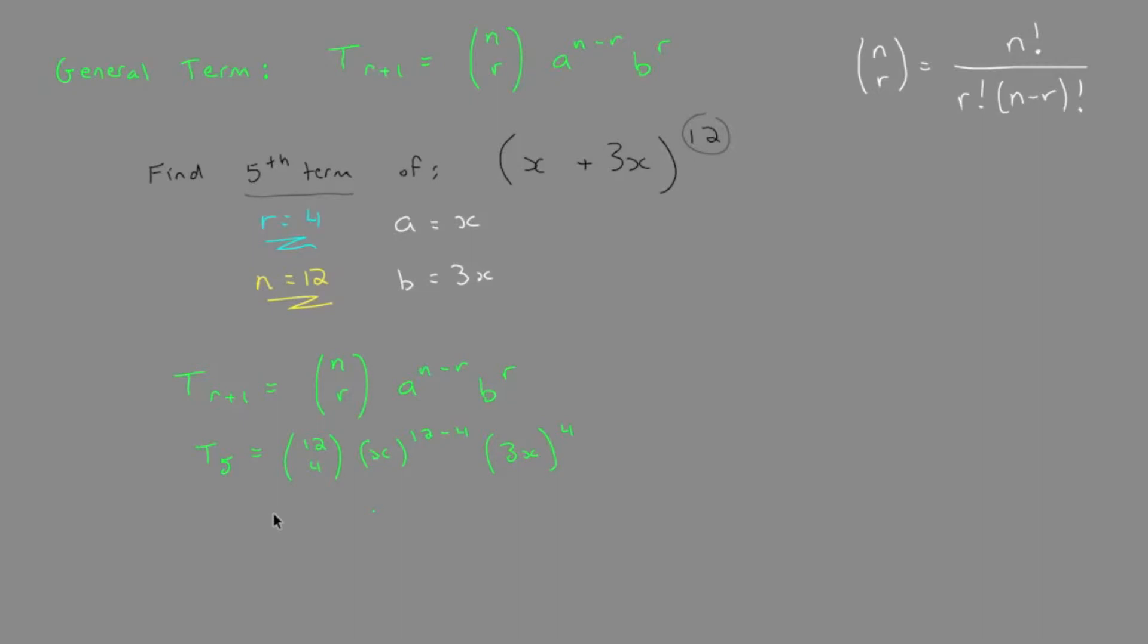The general term is written as just not as simplified as we can get it. So the general term just keeps the x, the a, and b separate. So it's actually just written like this. That's how the general term is written.